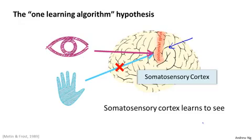Because of this and other similar experiments, these are called neural rewiring experiments. There's this sense that if the same piece of physical brain tissue can process sight or sound or touch, then maybe there's one learning algorithm that can process sight or sound or touch.